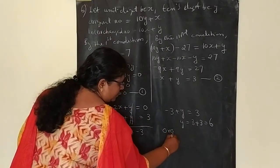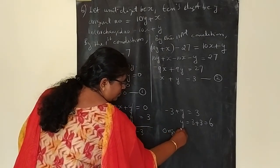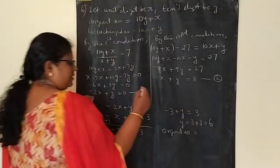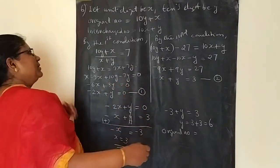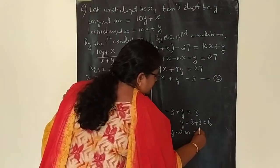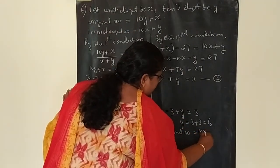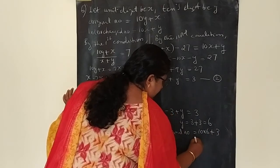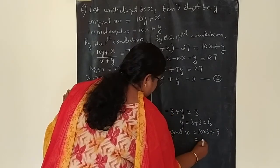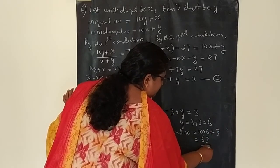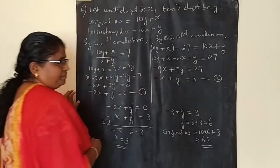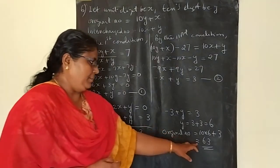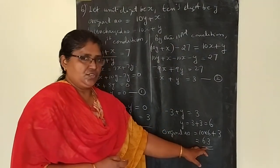So, what is the original number? The original number is 10Y plus X, which is 10 into 6 plus 3, that is 63. The original number is 63.